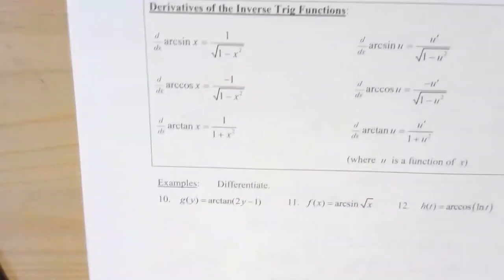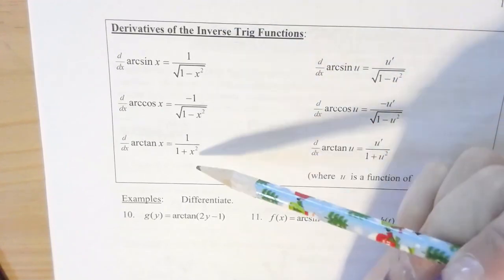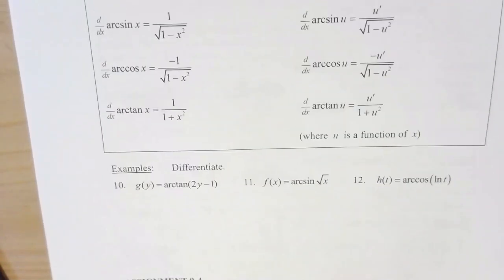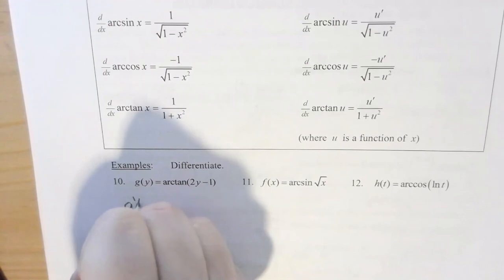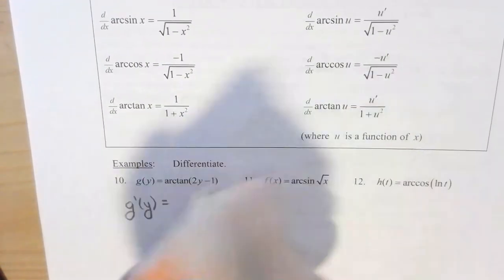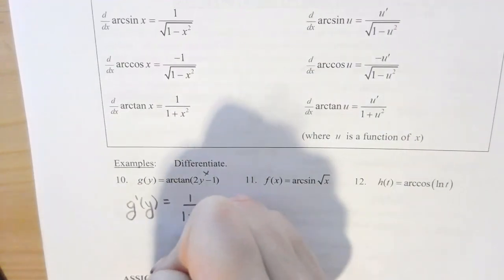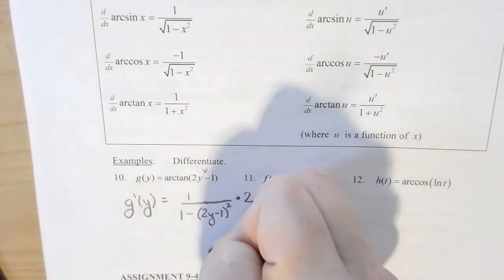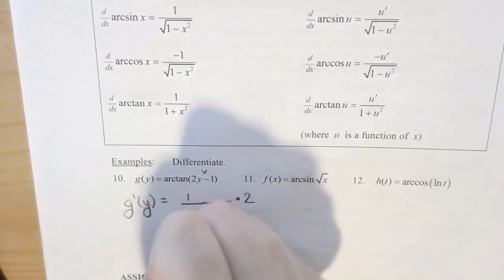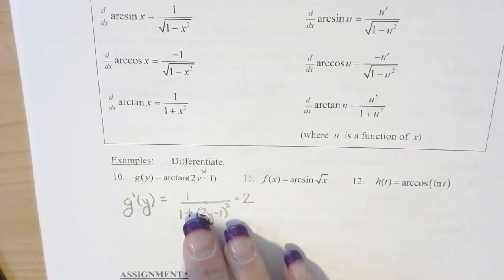Now we have the derivatives of all inverse trig functions — look for patterns to help memorize them; put these on your note cards. Let's practice. For g prime of y with arc tangent of (2y − 1): the derivative of arc tangent is 1 over (1 + u²), so it's 1 over (1 + (2y − 1)²), times the derivative of the inside which is 2. You can leave it at that, though sometimes you may need to simplify further.